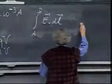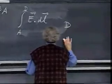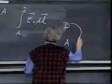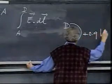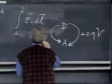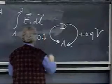It's no longer independent of the path. And so, if here is D and here is A, and you go this way, you find 0.9 volts plus. If you go this way, you find minus 0.1 volts.